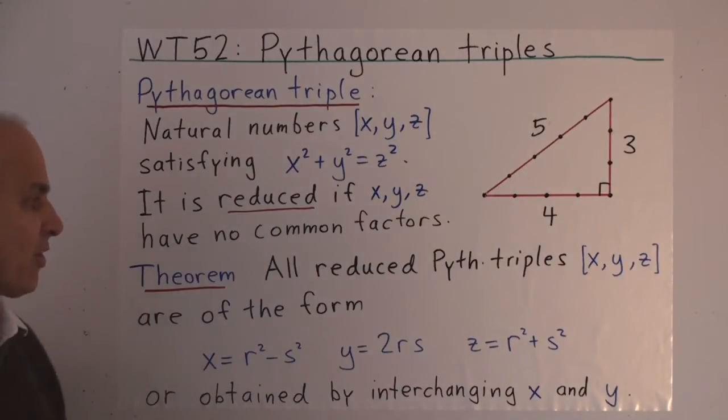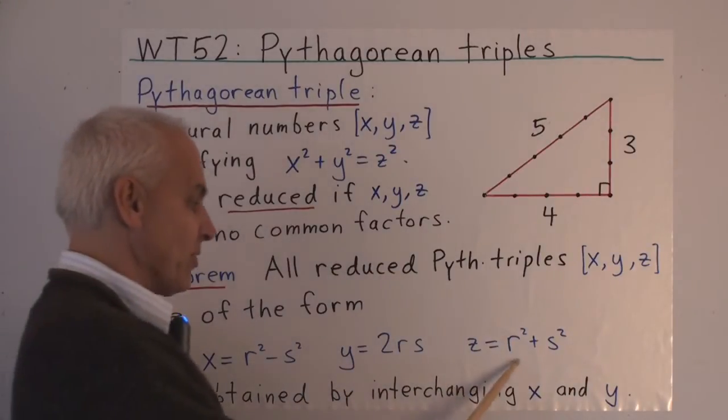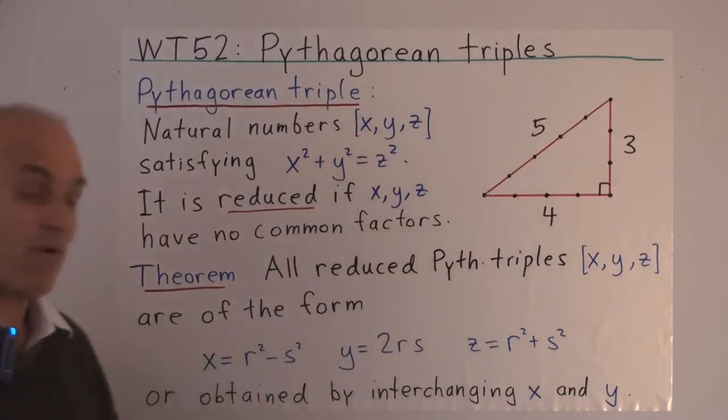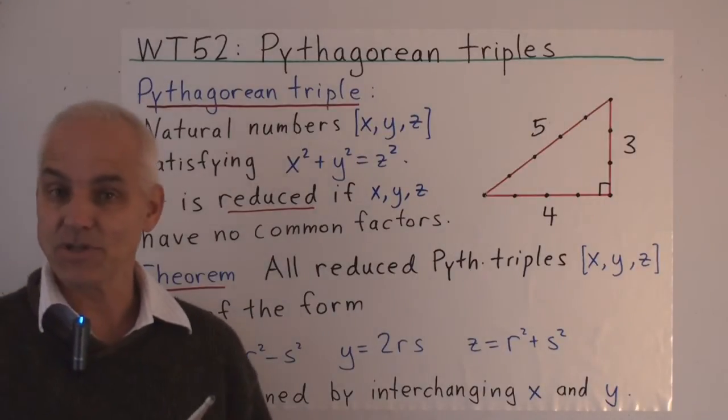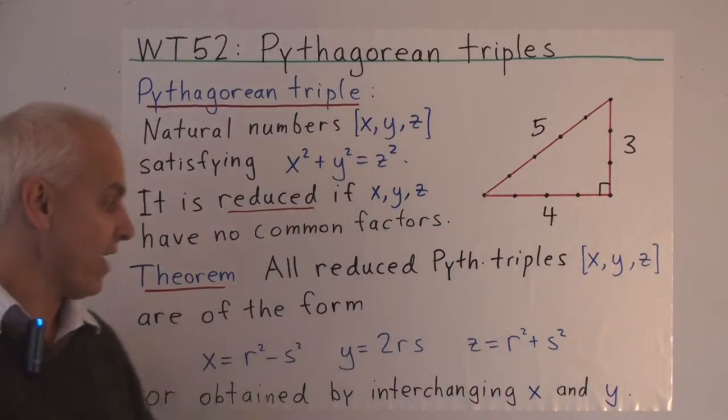So the main theorem is that all reduced Pythagorean triples are of a particular form. They're of the form x=r²-s², y=2rs, and z=r²+s², for some integers or natural numbers r and s.